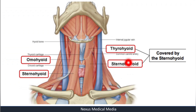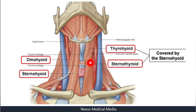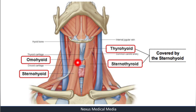Here you can see the infrahyoid muscles labeled. The thyrohyoid runs from the thyroid cartilage to the hyoid bone. The sternohyoid runs from the sternum to the hyoid bone. Here a muscle has been removed so you can see deeper structures — the sternohyoid goes from the sternum to the hyoid. And here you can see the omohyoid with its superior belly and inferior belly.